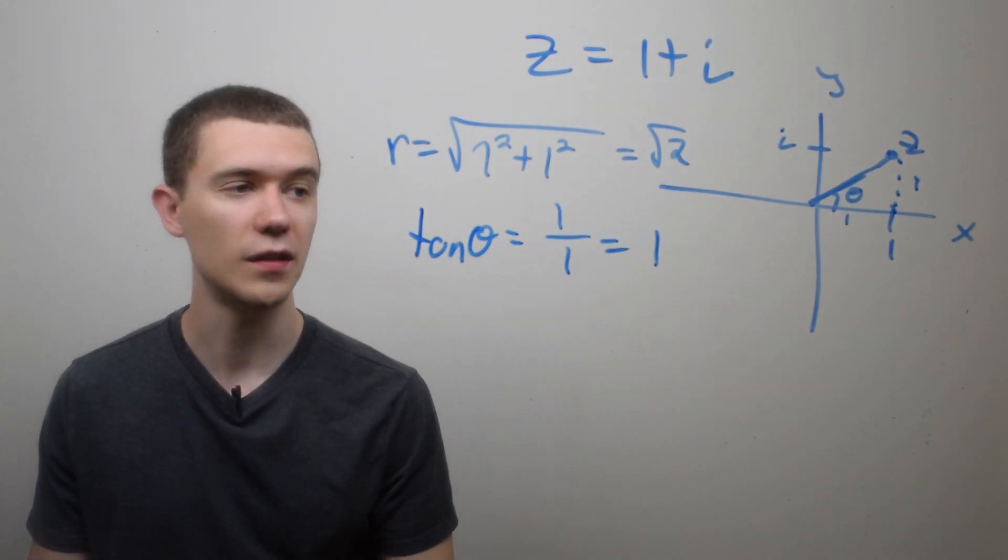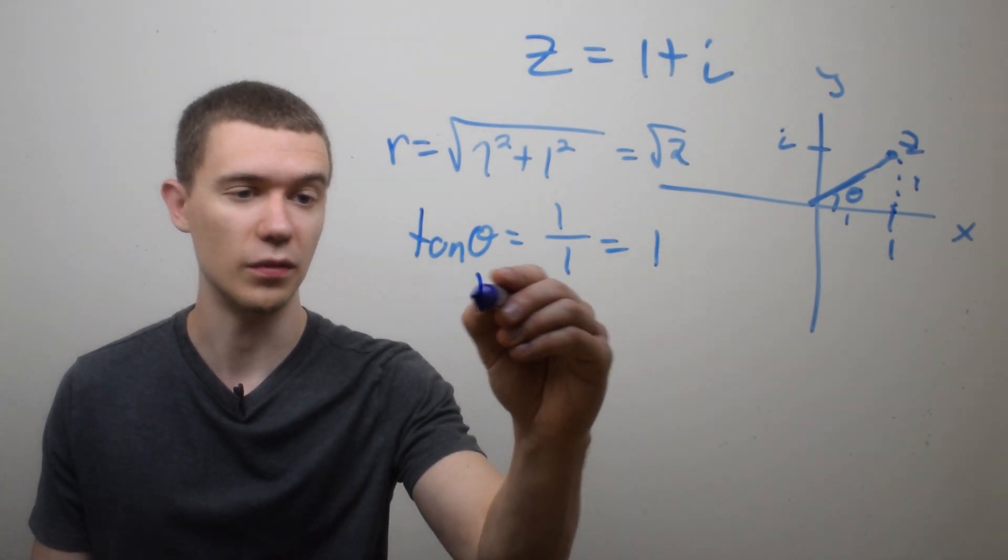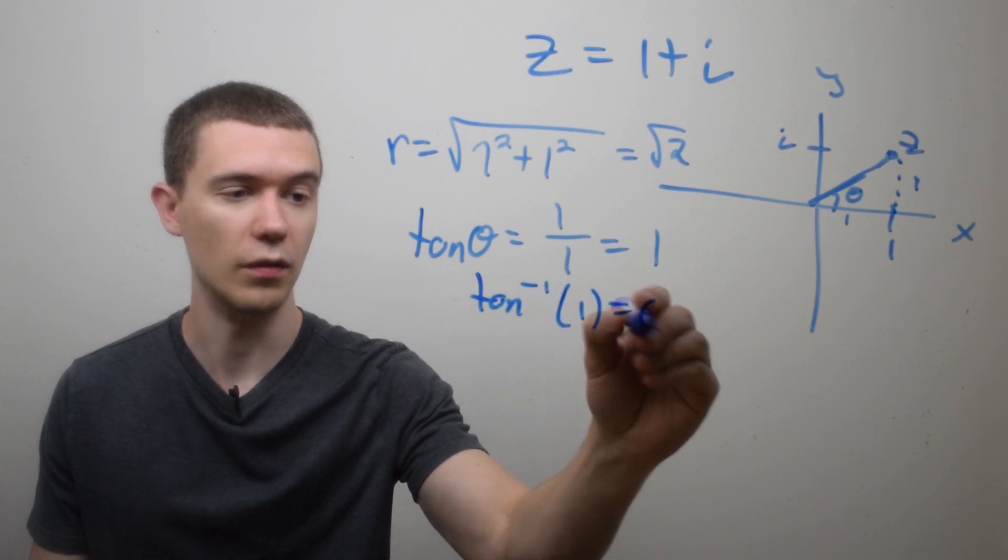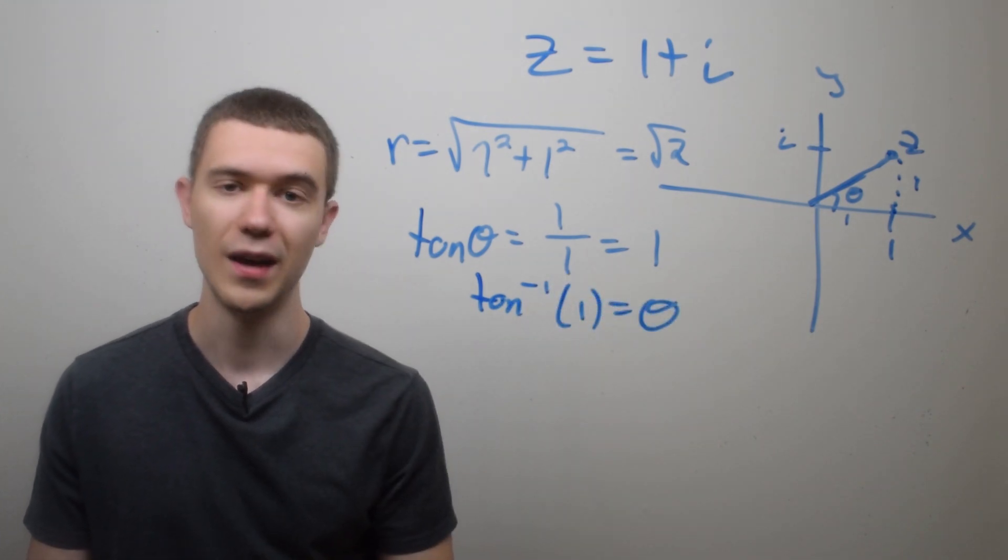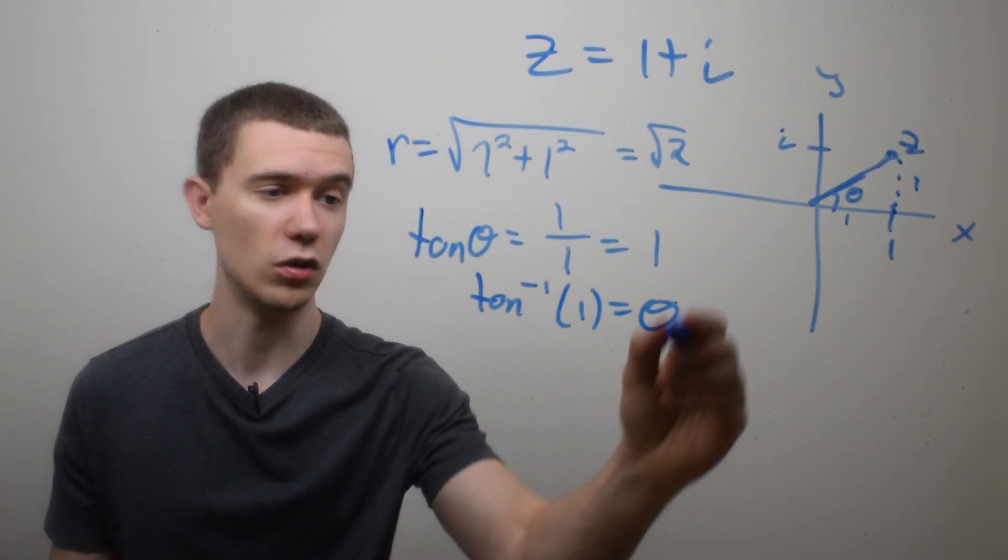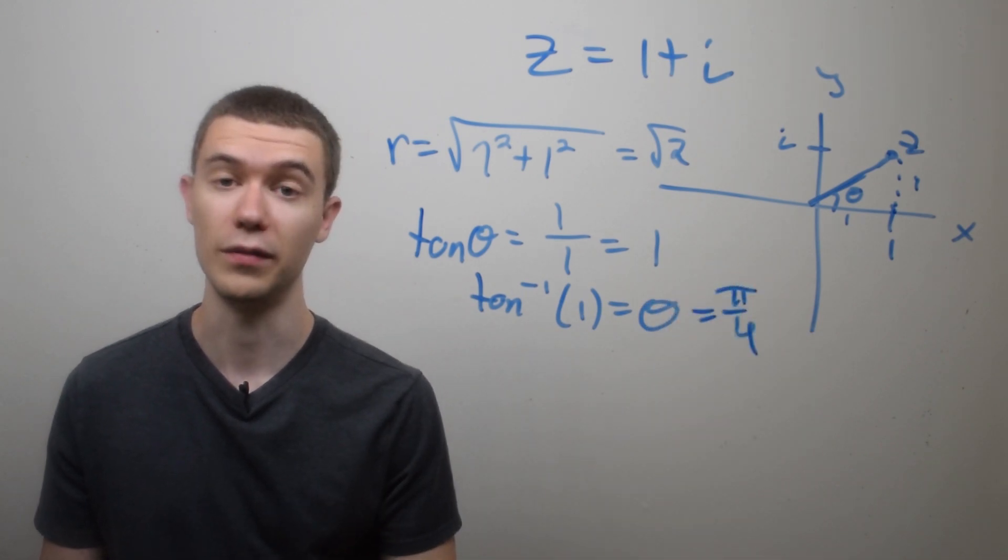And if I take the inverse tangent of both sides, inverse tangent of 1 will be theta, will be my argument. And if you plot this into a calculator or if you're good with basic trig skills, you'll know that inverse tangent of 1 is equal to pi over 4 radians or 45 degrees.